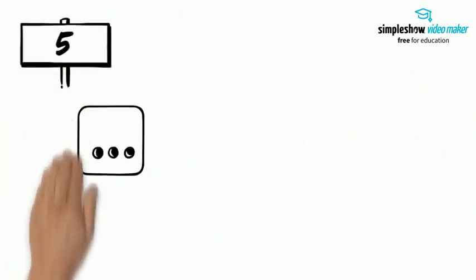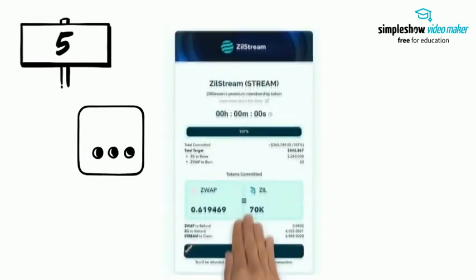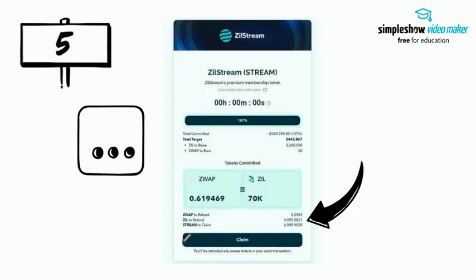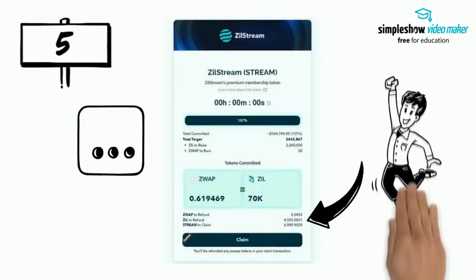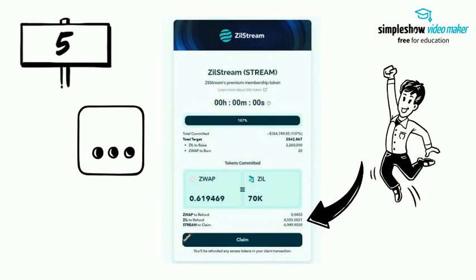Step 5: Wait for the sale to be over. When it is over, check the dashboard to see how many stream tokens you can claim and how many Zwap and Zill tokens will be refunded to you. Click on the claim button to claim your tokens.